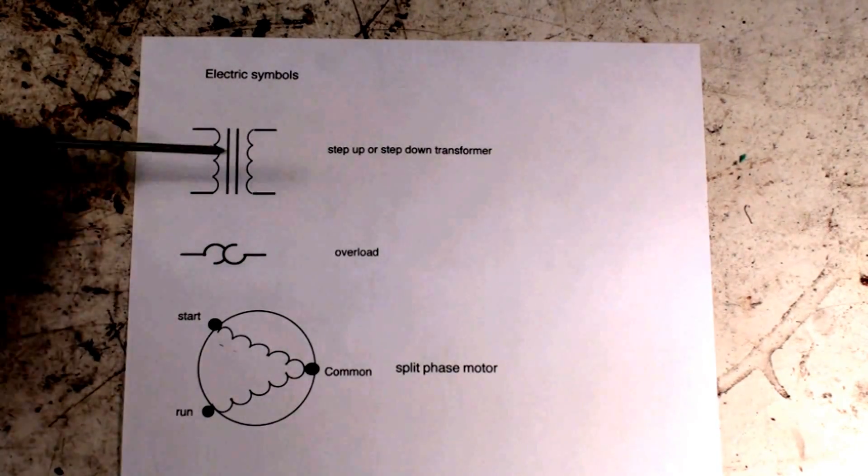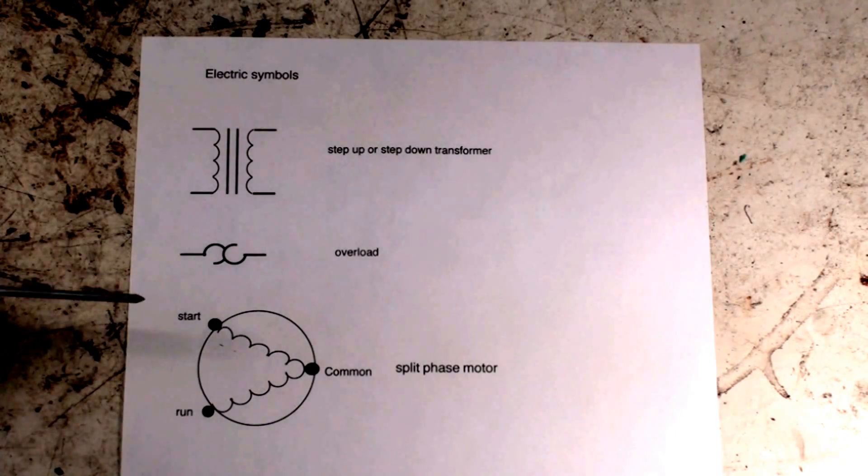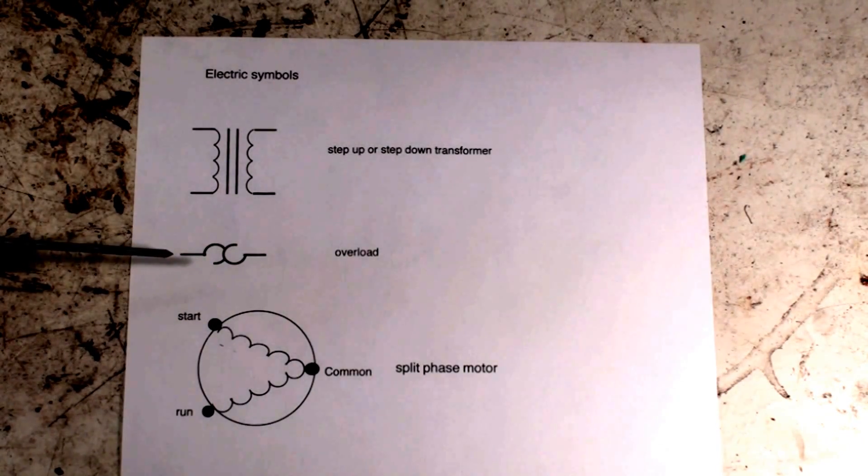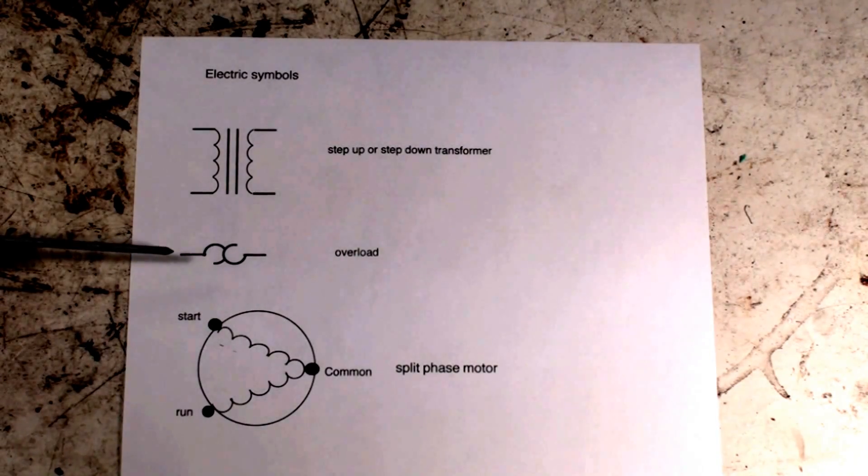The next one is a type of overload - heat operated overload - oftentimes used in conjunction with a contactor.